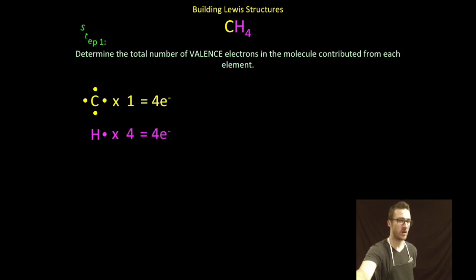I have four atoms of hydrogen in this molecule of CH4, contributing a total then of four valence electrons. My total number of valence electrons in the molecule? Four from the carbon and four for the hydrogen, indicating a total of eight valence electrons.